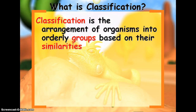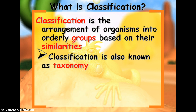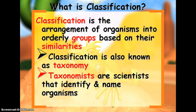So what is classification? It is the arrangement of organisms into groups based on similarities. You would do this naturally — if you had a whole bunch of stuff out on a desk, you might organize papers that have been graded, papers that have not been graded, papers that don't have anything written on them. The same thing happens when we look at species. Classification is also known as taxonomy, which is the study of species and classifying species. A taxonomist will identify and name new organisms.